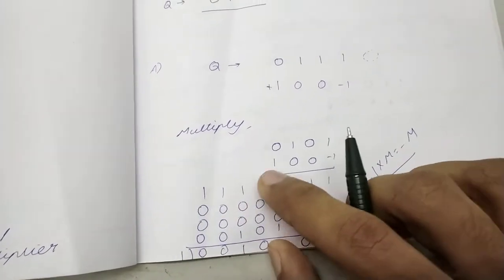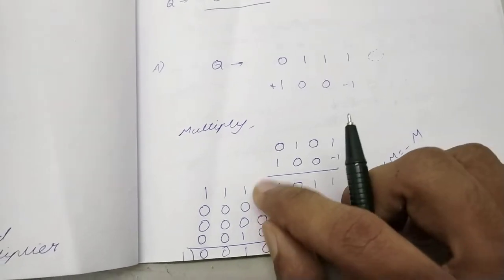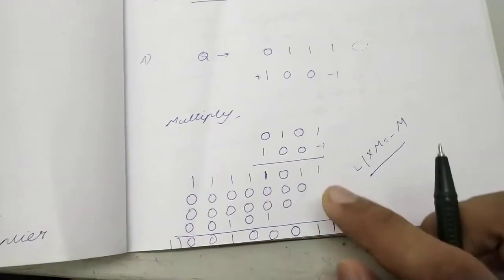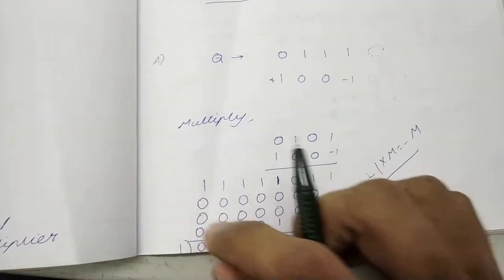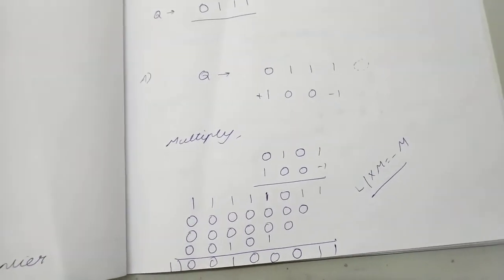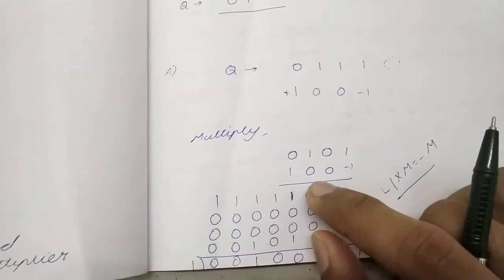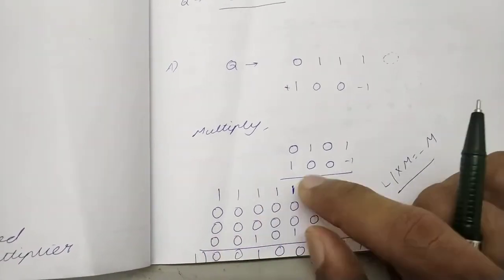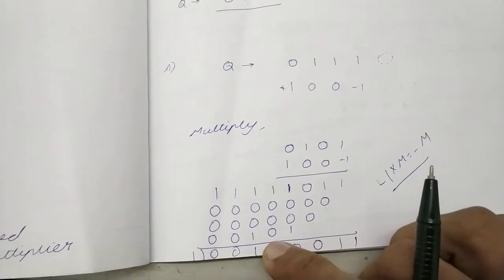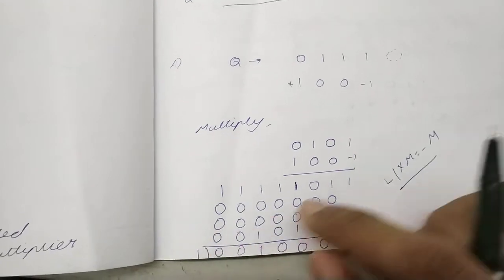Then we append it using, always remember, append it using the sign bit. You cannot use zeros here, you need to append it using the sign bit. So one, we append the rest with ones. Then we multiply it with zero, so zeros come here. Zero again, zeros come here. Then one, one, zero, one, zero.